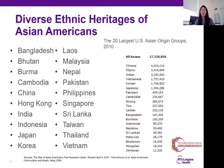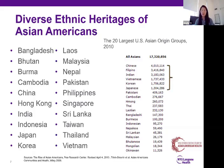Just to close out on the quick stats about Asian Americans: there are about 17.3 million Asian Americans in the U.S. as of 2010. The largest groups are Chinese, Filipino, Indian, Vietnamese, Korean, and Japanese. I highlight these six groups because they make up approximately 86 to 87 percent of the Asian American population.